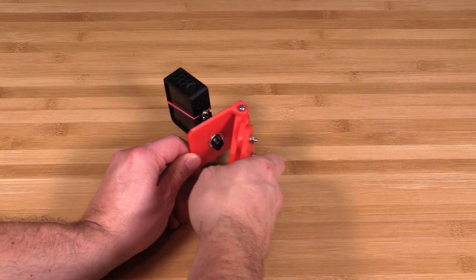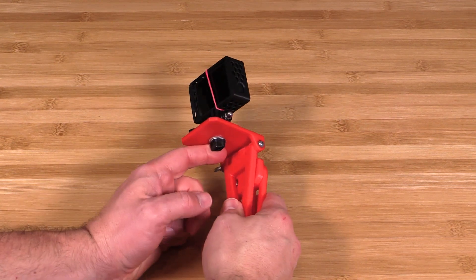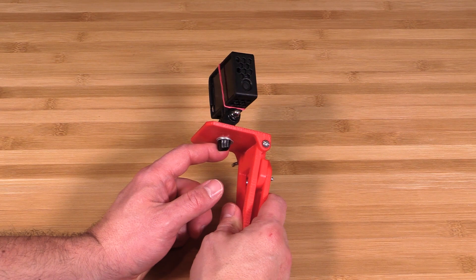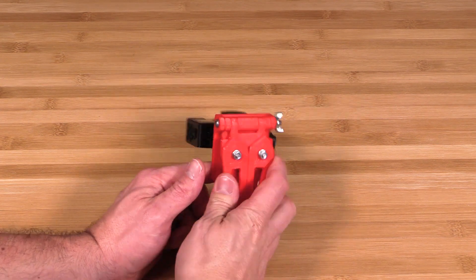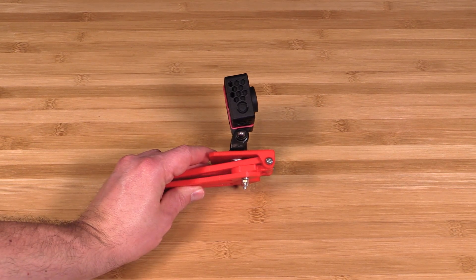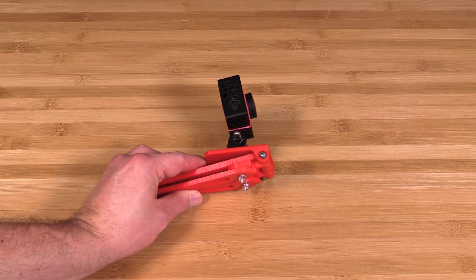And you can see you can put a standard one-quarter thread in there so it'll fit basically anything that has a one-quarter thread, which is most tripod mounts. And it folds up really quite compact. Take that GoPro off of there and you can easily put this thing in your pocket.